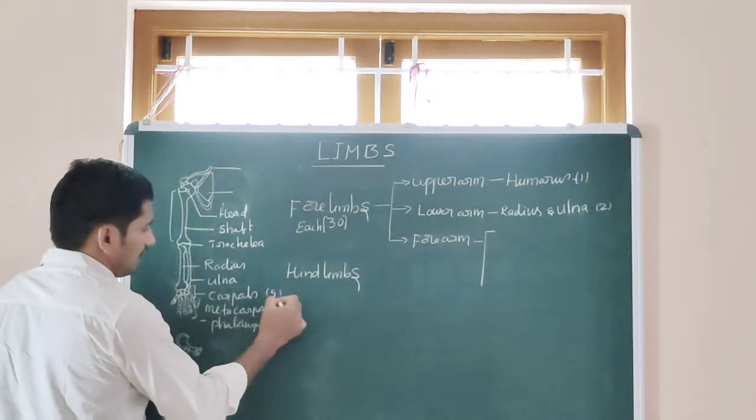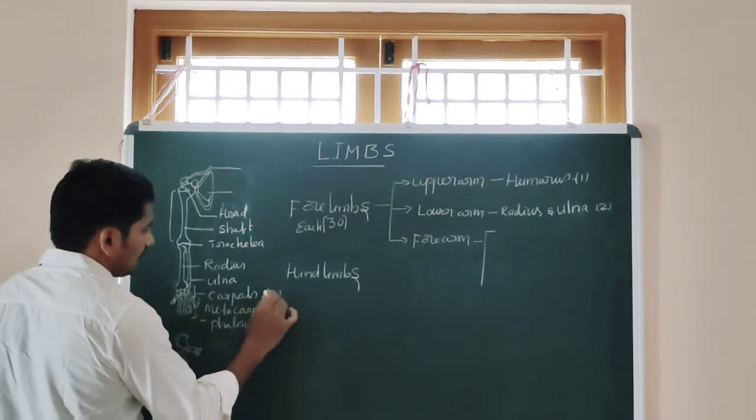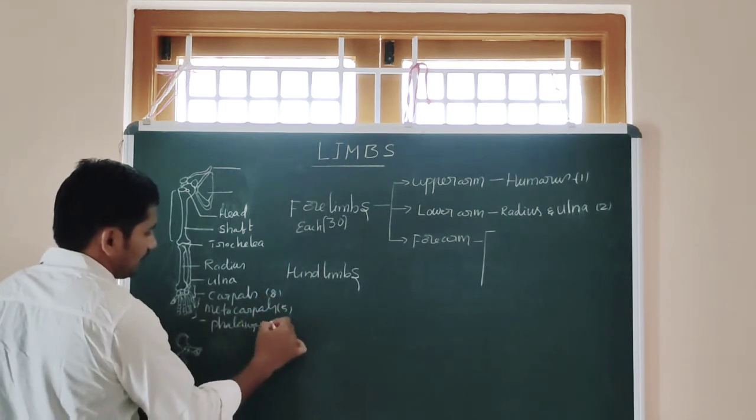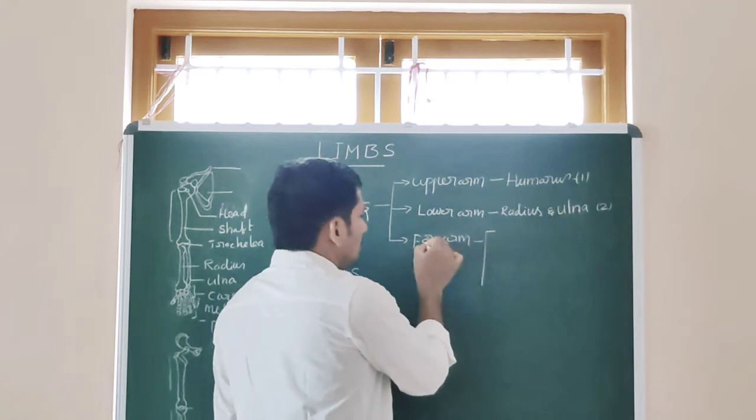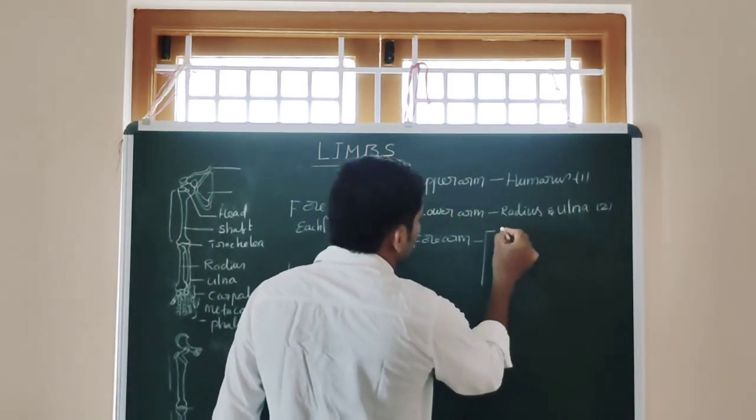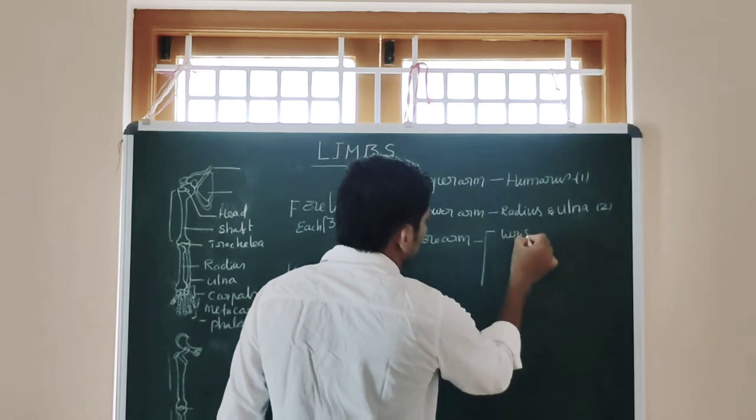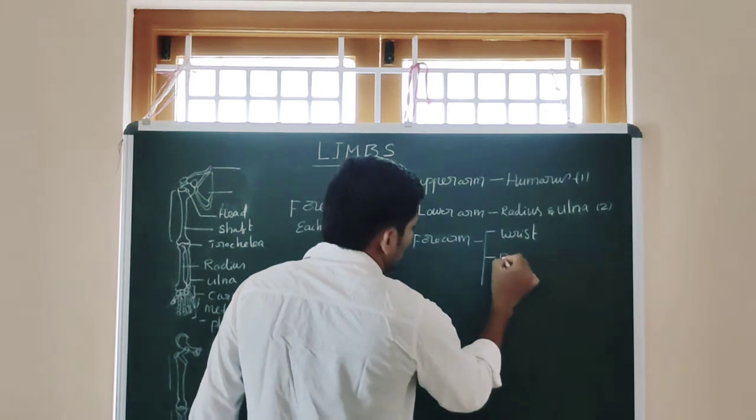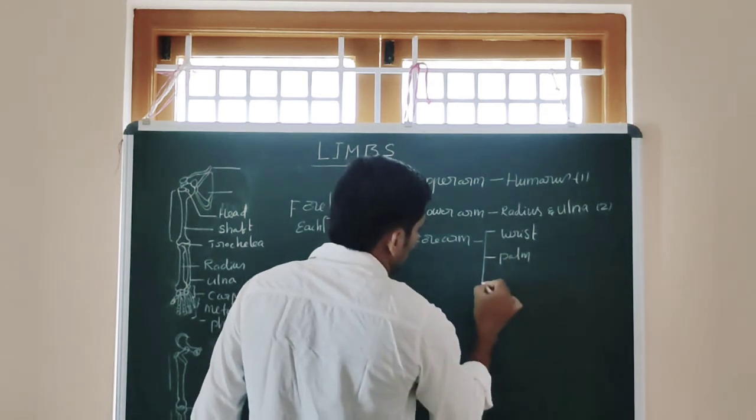The number is 5 here, these are 8 in number, this number is 5, and these are the forelimb general bones. Carpals, also called the wrist, and metacarpals, also known as the palm bones, and these are the digits.